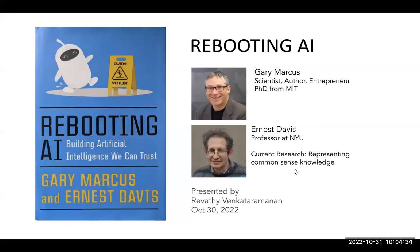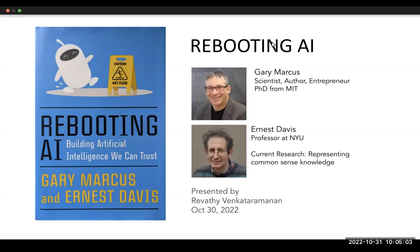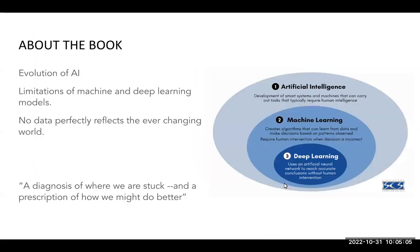The book consists of eight chapters total: the first five talk about the limitations and issues with current AI systems, and the last three talk about insights we can gain from the human mind and how to implement them into solutions. The last three chapters are about 100 pages, so this has been divided into two presentations.